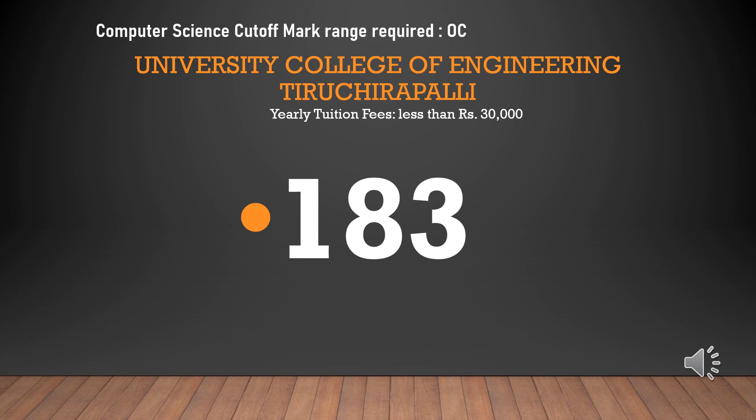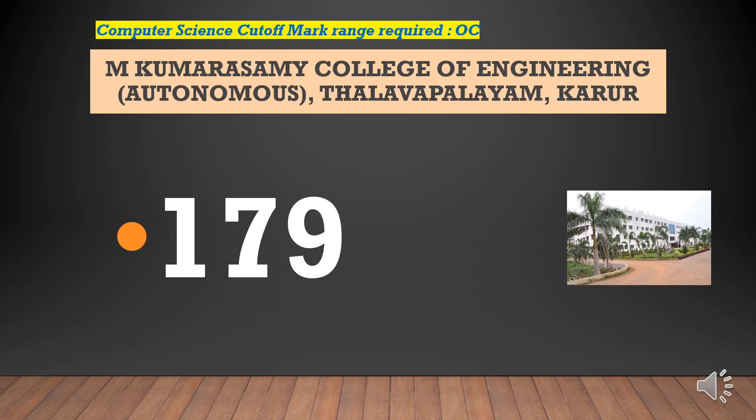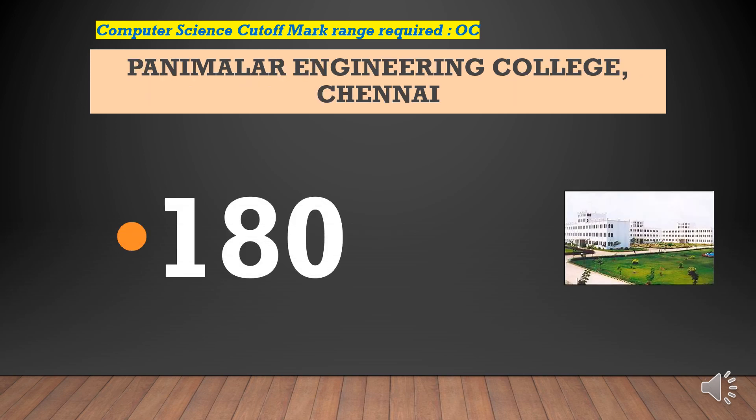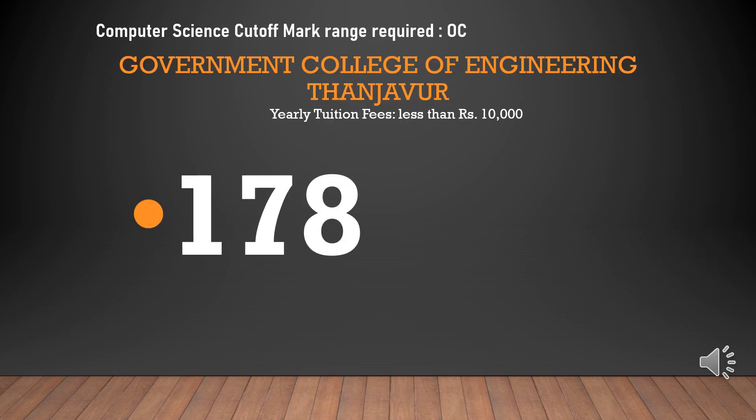University College of Engineering Tiruchirappalli — cut-off required for CSEOC is 183. M. Kumarasamy College of Engineering — cut-off required for CSEOC is 179. Paavai Engineering College — cut-off required for CSEOC is 180. Government College of Engineering Thanjavur — cut-off required for CSEOC is 178.